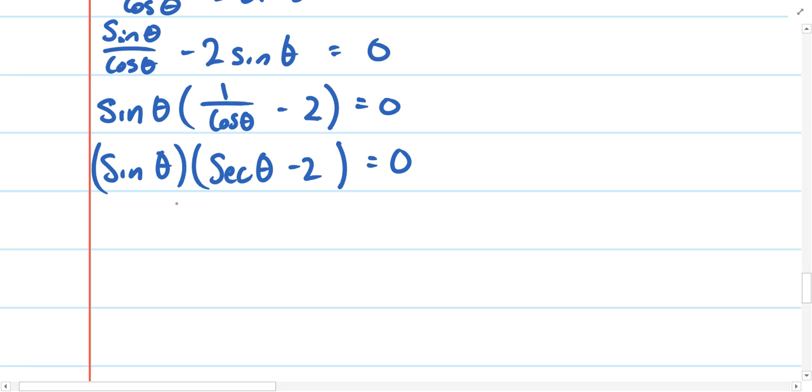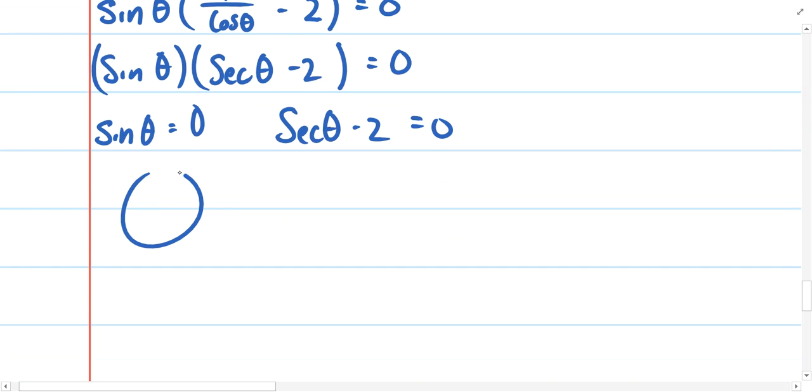So again, when we have factors that multiply to equal 0, either factor can be equal to 0. So we'll find when does sine theta equals 0, and we will find when does secant theta minus 2 equals 0. Well, sine theta equals 0, that's easy. The y value is 0 here and here. So we'll say that theta can be 0 or pi on account of that factor.